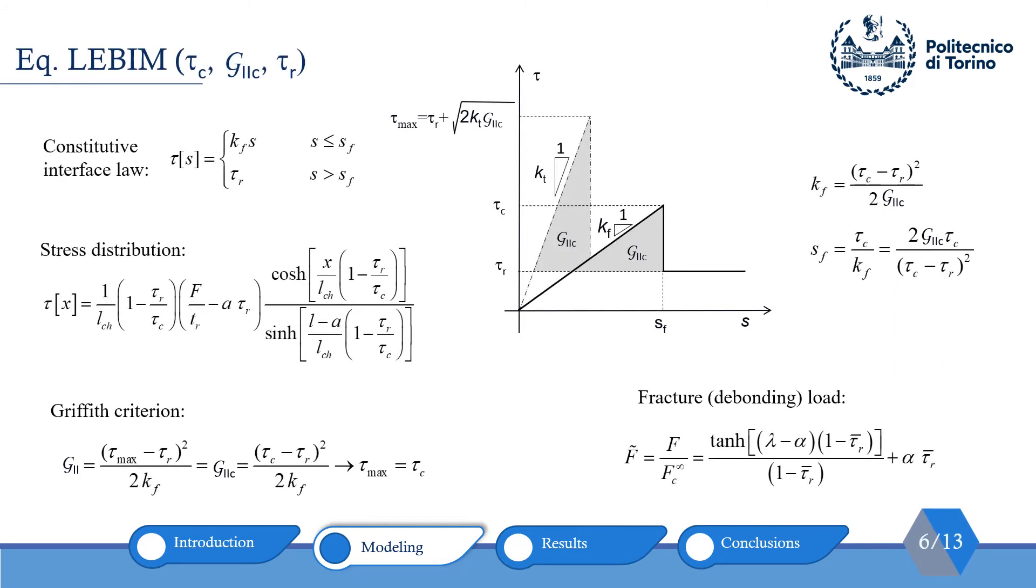Another model that we used in our analysis is equivalent LEBIM. The constitutive law for equivalent LEBIM is quite similar to LEBIM and the only difference is that here we have a fictitious stiffness k_f instead of k_t. After knowing the constitutive law, we can calculate stress distribution and as before, we used Griffith's criterion to determine the fracture or debonding load. So, it should be noted that here, tau_c is an important parameter while in LEBIM, kt was an important parameter.